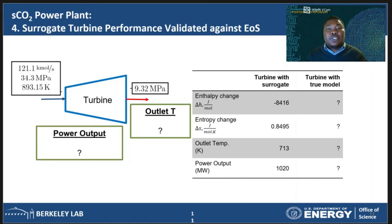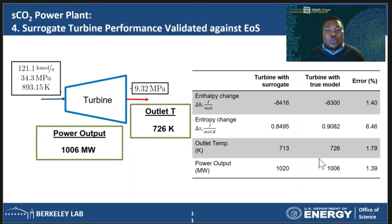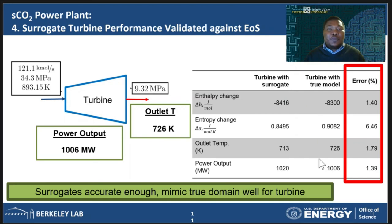Now we have some information about the exact conditions around the inlet of the turbine. To validate the results we got with the surrogates, we need to simulate the turbine with the true properties — that is the Span-Wagner model — using the turbine inputs we now have and then compare the results to what we got with the surrogates. We fixed the inlet conditions of the turbine and had the model predict the power output and outlet temperature using the true EOS model. The results are shown in the table on the right. Of particular interest are the results in the last column highlighted in red — the agreement between the results for the outlet temperature and power output with both models is excellent, under 7%. This gives us some measure of confidence in the accuracy of our predictions of the turbine performance. We adopted a similar verification approach for other units within the flowsheet and saw good agreement.